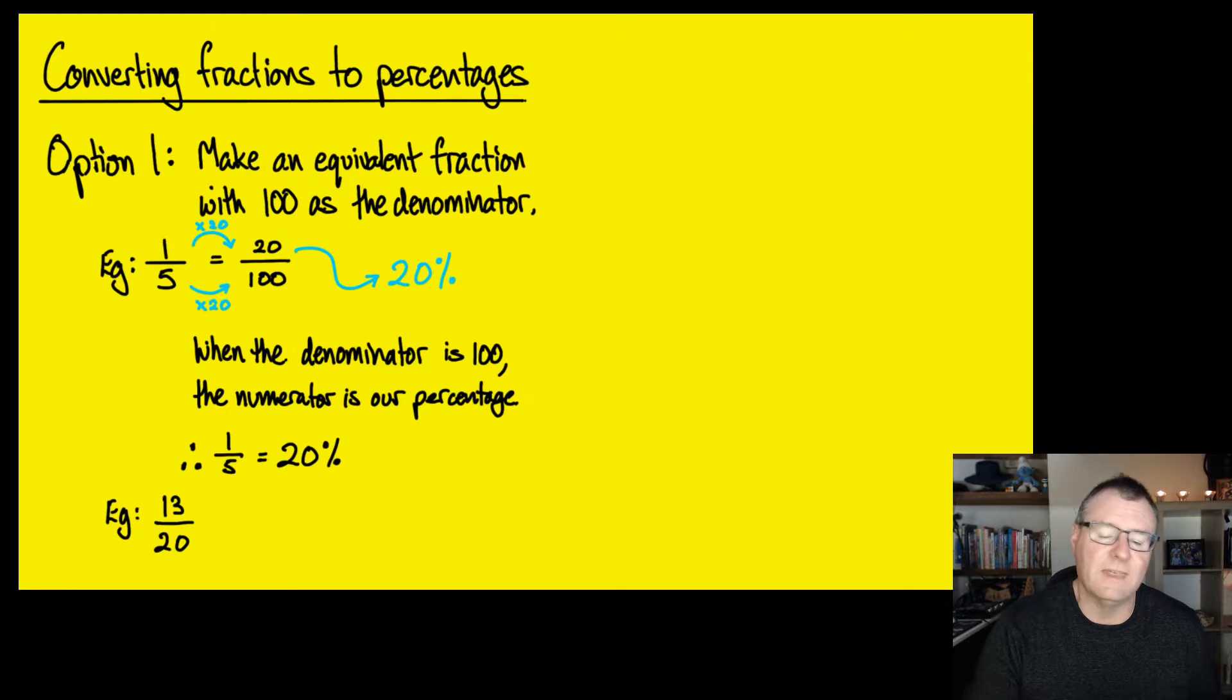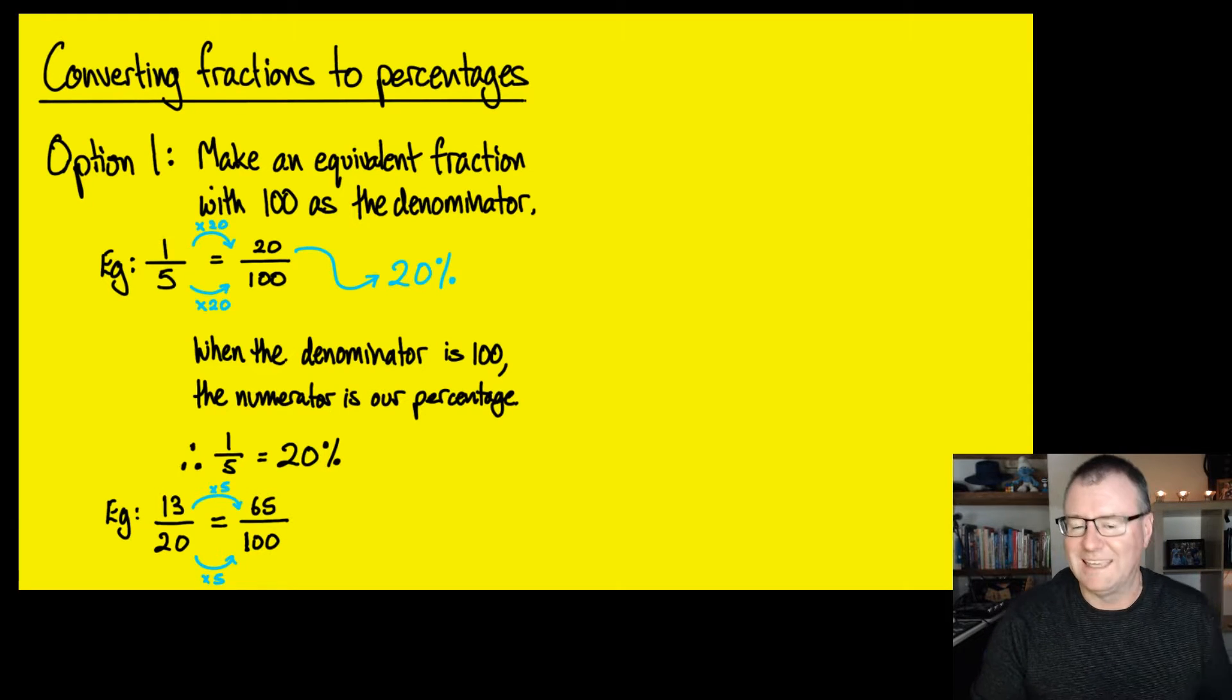13 over 20. I'm going to write that as an equivalent fraction with 100 in the denominator. I took the 20, and to make it 100, I had to multiply it by 5. So what do I do on the bottom? I have to do to the top. I take the 13, I multiply that by 5, and you can do that in your calculator if you get stuck, and you get 65.